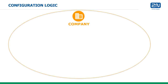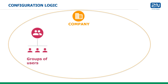The first step in configuring access control is to define a company. This is the basic entity that allows users to be split into different sites or buildings. Each company will contain at least one entity known as a group. Users then need to be assigned to their relevant group.